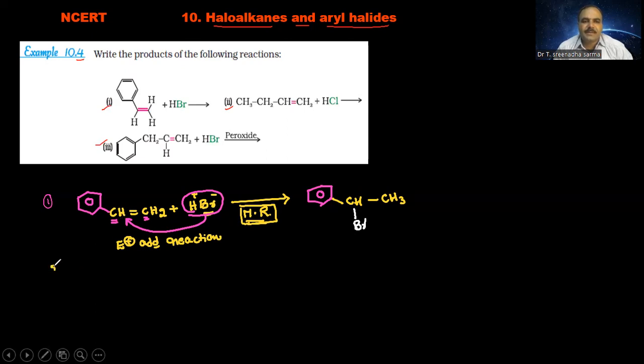And the second one: CH3-CH2-CH=CH2, this one is reacted with hydrochloric acid, H+ ion and Cl-. Cl- is attached to less number of hydrogen atoms of carbon, so the formation of the product...